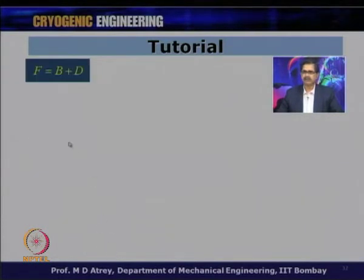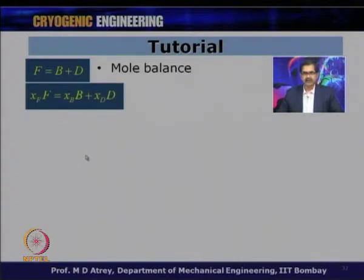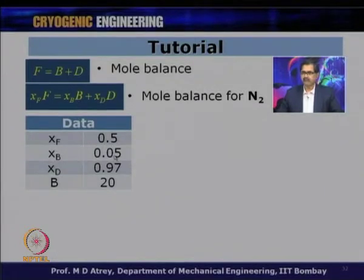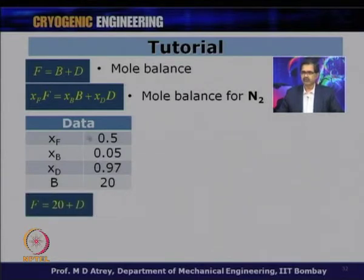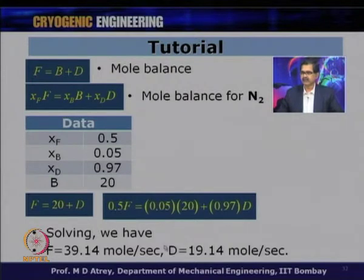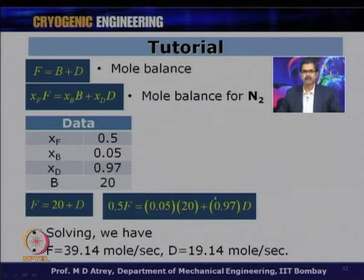Starting with molar balance: F = B + D, and for nitrogen: 0.5·F = 0.05·B + 0.97·D. With B = 20 moles/s, F = 20 + D. Solving these two equations simultaneously gives F = 39.14 moles/s and D = 19.14 moles/s.